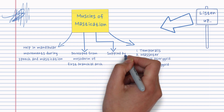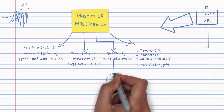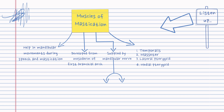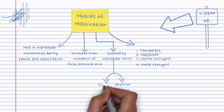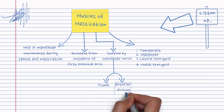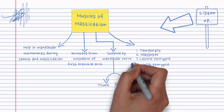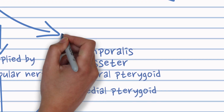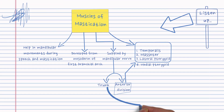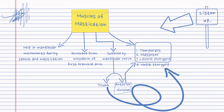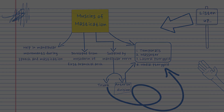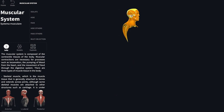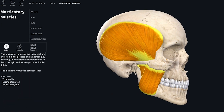Because they develop from the first branchial arch, they are supplied by the mandibular nerve — the third branch of the trigeminal nerve. The anterior division supplies the first three muscles: temporalis, masseter, and lateral pterygoid, while the trunk supplies the last one, medial pterygoid.